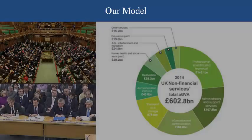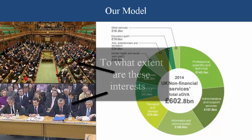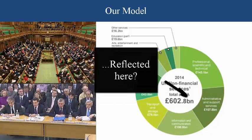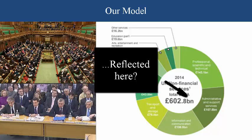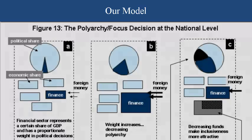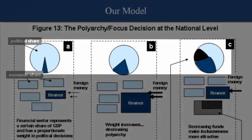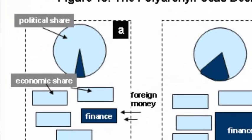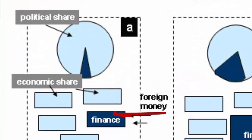As resources come into the country, we see that finance captures a certain amount of polyarchy — a certain share of policymakers' time and interest, or a certain share of power. We depict this political share in Figure 13 as a pie shown in the top part of the figure. As finance receives more foreign investment, we see their political share increase.